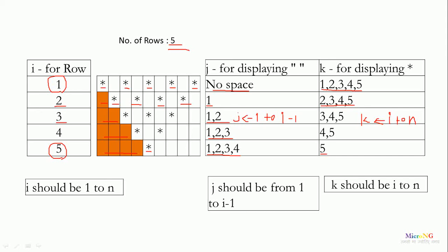By using this logic, we can print this particular pattern. We need to consider only three index variables: i, which ranges from 1 to n; inside that, j ranges from 1 to i minus 1 for printing the spaces; and k ranges from i to n for printing the stars followed by a space.